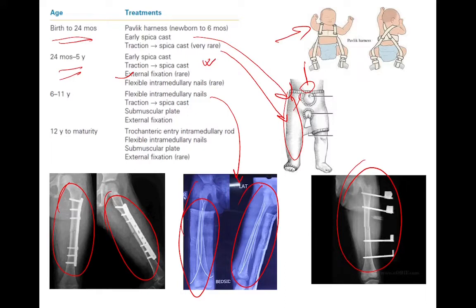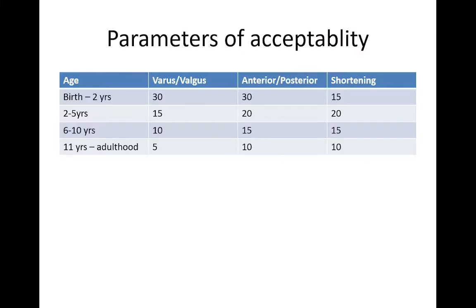From 12 years onwards to skeletal maturity, a trochanteric entry intramedullary nail may be used. The option of flexible intramedullary nails is also available, along with plating and external fixation.